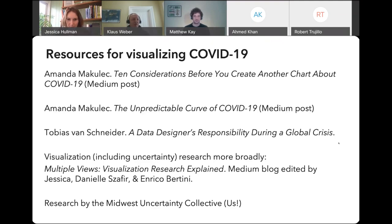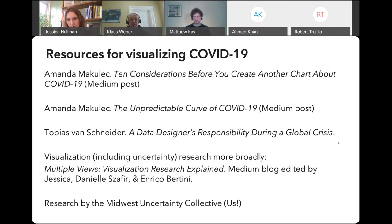It seems that many government officials and policymakers reference these models as a way to inform pretty substantial decision-making in the present situation. Are there some models that are better or worse — either based on better data or better assumptions? This is where our lack of medical knowledge becomes dangerous. We're really commenting on the visual representations more than the quality of the models, because that's not our expertise. Nobody's really modeling everything, so you really have to be trying to look at visualizations predicting the economic downturn alongside visualizations of hospitalization overwhelm.